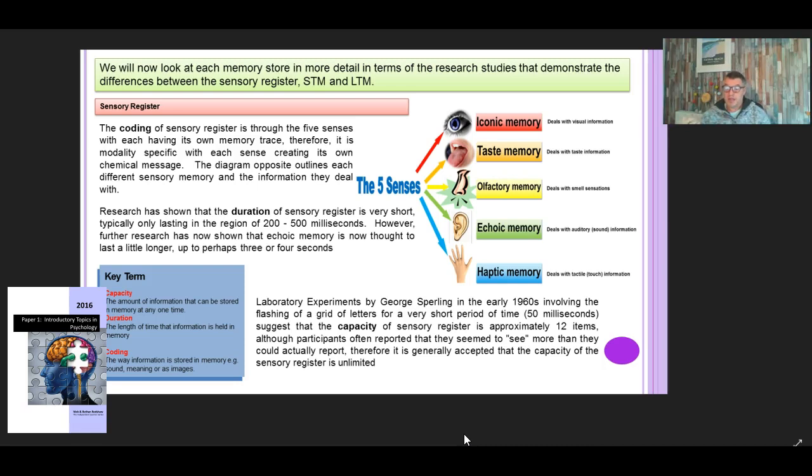Okay, and laboratory experiments by George Sperling in 1960 really demonstrated the capacity of sensory register which is approximately about 12 items.